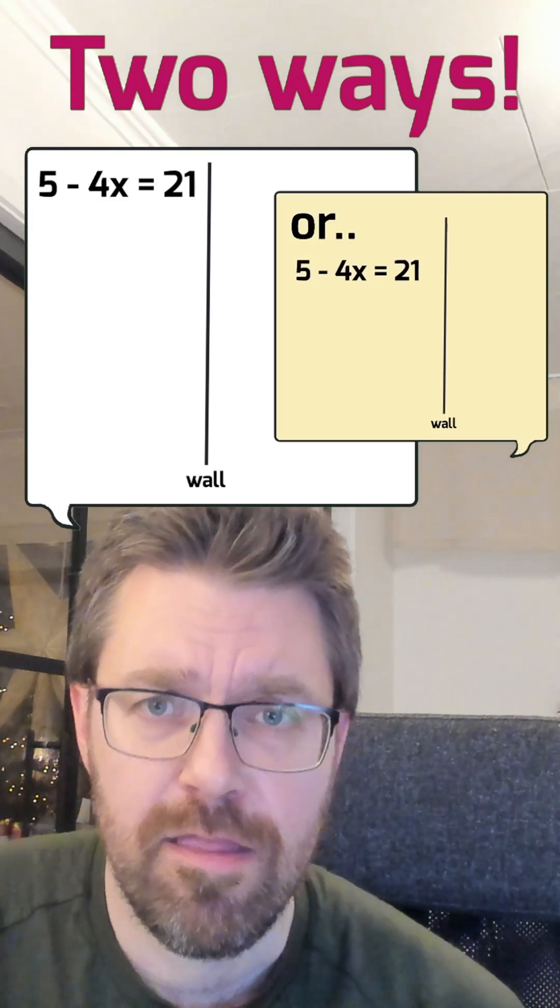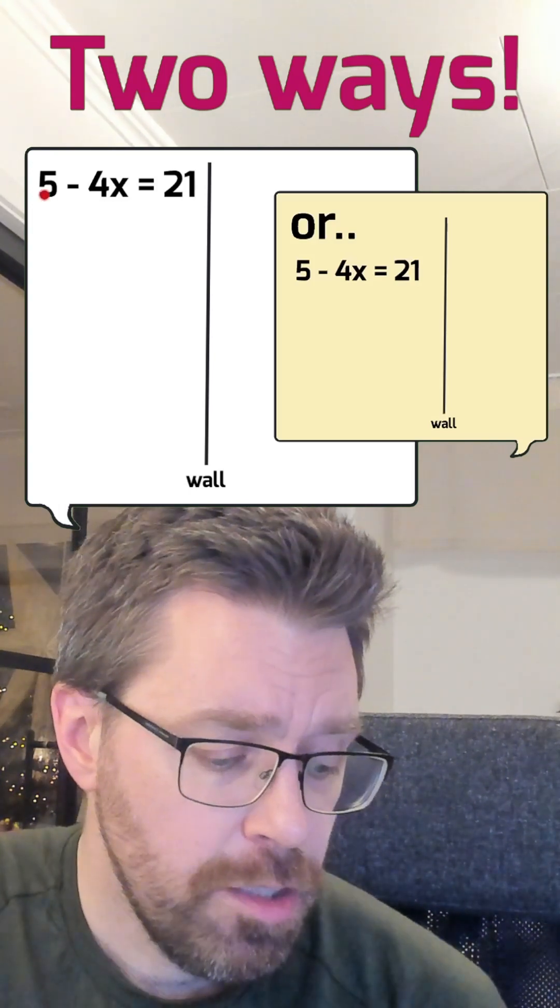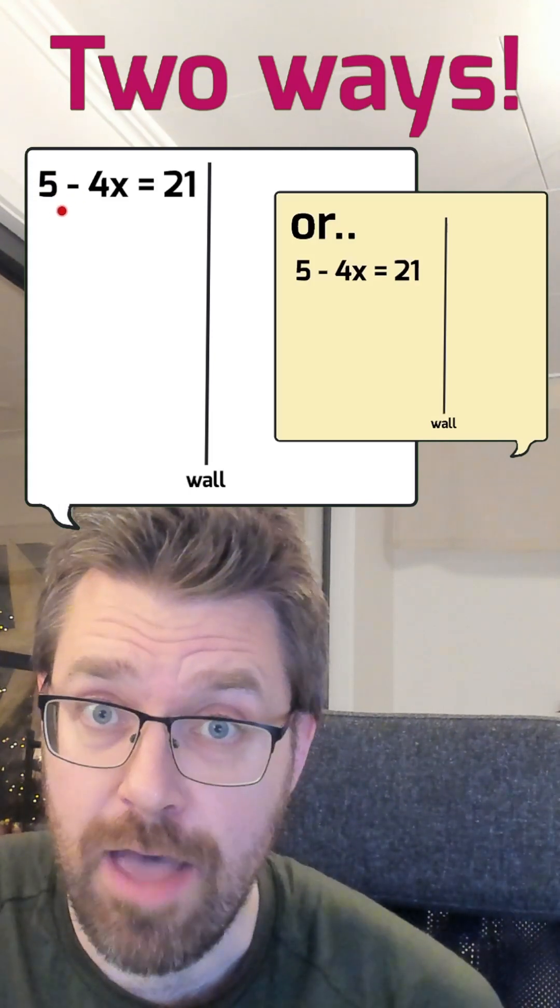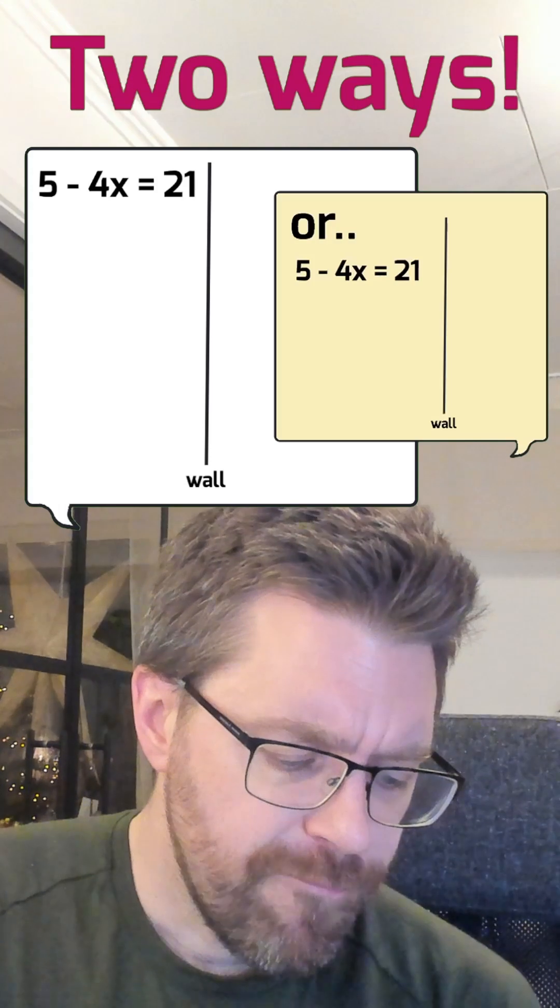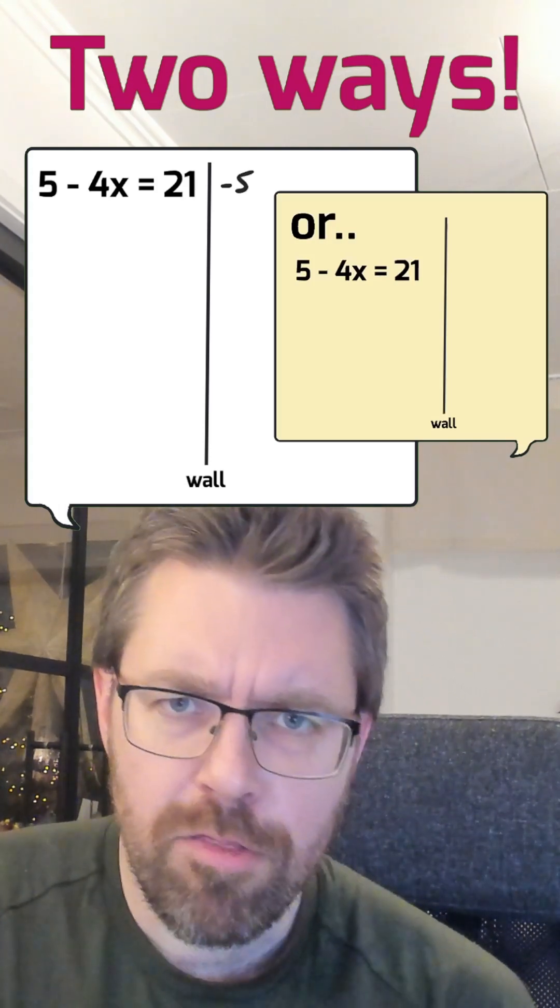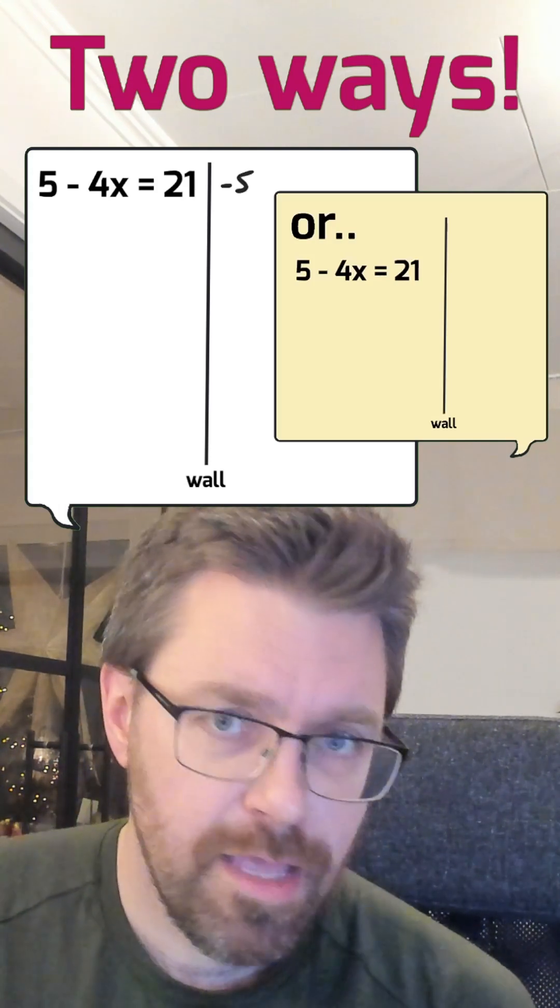The first way is the fastest one. You start with sending over the 5 and then you get rid of minus 4. Sending over the 5, you do it with inverse operation to plus 5 and that is minus 5.